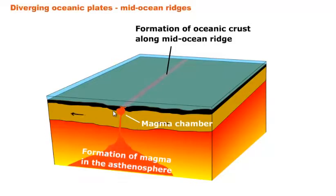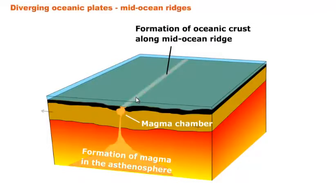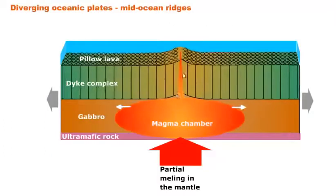We get a magma chamber below the surface. When the two plates move away from each other, the empty space between them is filled with this magma immediately from the magma chamber. The magma crystallizes in a couple of seconds and forms new oceanic crust. This section then rips apart again, pulling left and right, creating a brand new opening filled with even younger magma — that's how the youngest rock ends up right along the mid-ocean ridge.